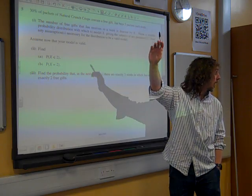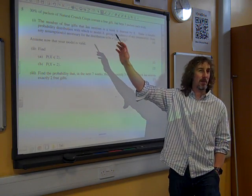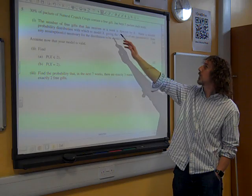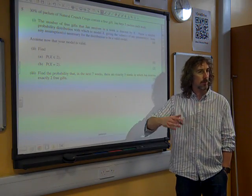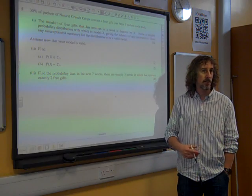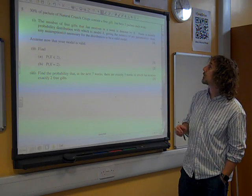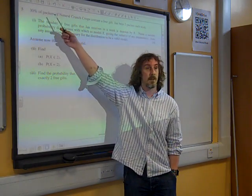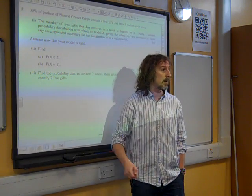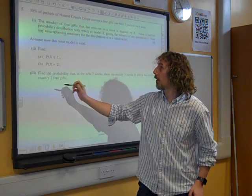Why does it so well fit the binomial distribution? Well, five packets a week, so we've got a fixed number of trials, a fixed number of times that it's going to happen. So that's quite nice. And we've got a constant probability of success finding a free gift. So we're going to use the binomial distribution.